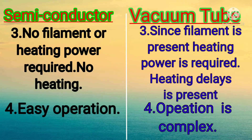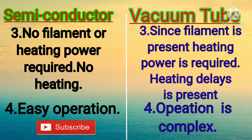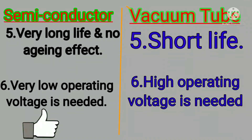Point 5: In Semiconductor, delay is present. Operation is easy, whereas in Vacuum Tube operation is complex. Point 7: Semiconductor has very long life with no ageing effects. Point 8: Vacuum Tube has short life. Point 9: Semiconductor needs very low operating voltage. Point 10: Vacuum Tube needs high operating voltage.